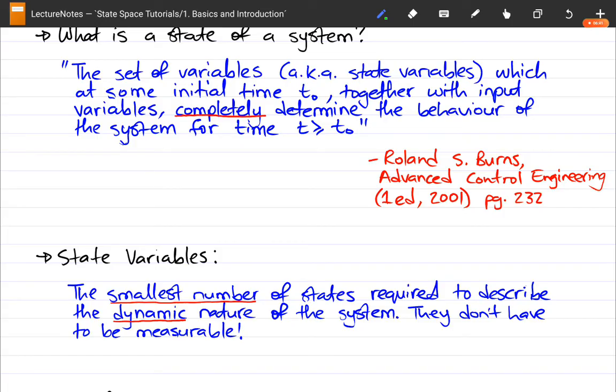And then also if you can define your system with the least number of states, then you should be able to have a very simple model that describes your whole system without it being redundant. And why do we talk about the dynamic nature?